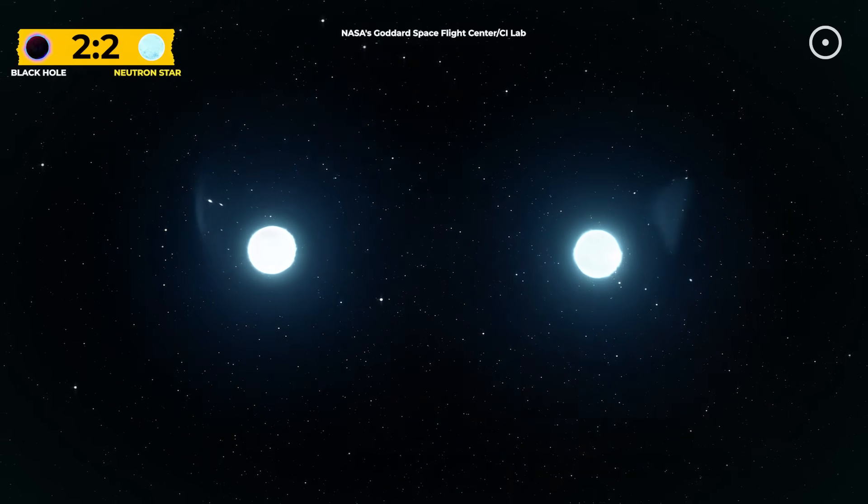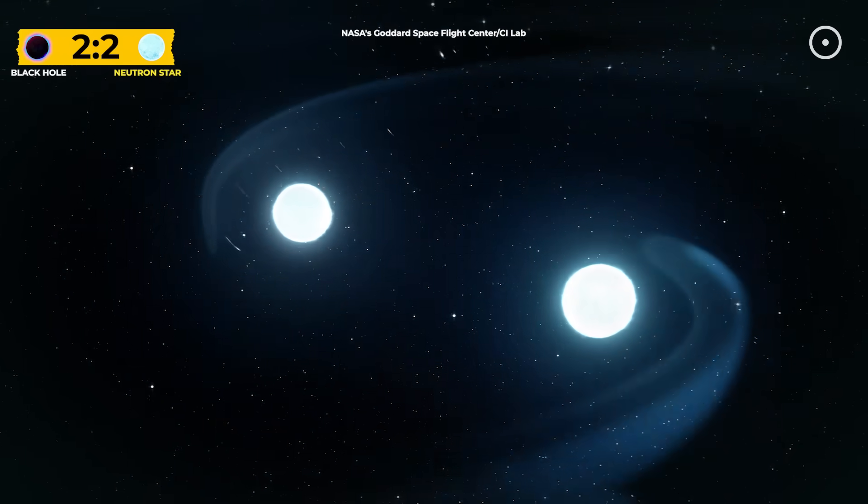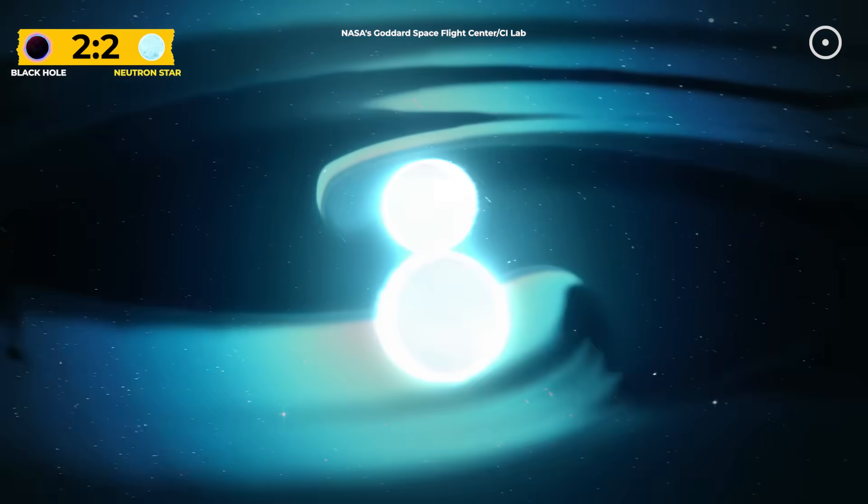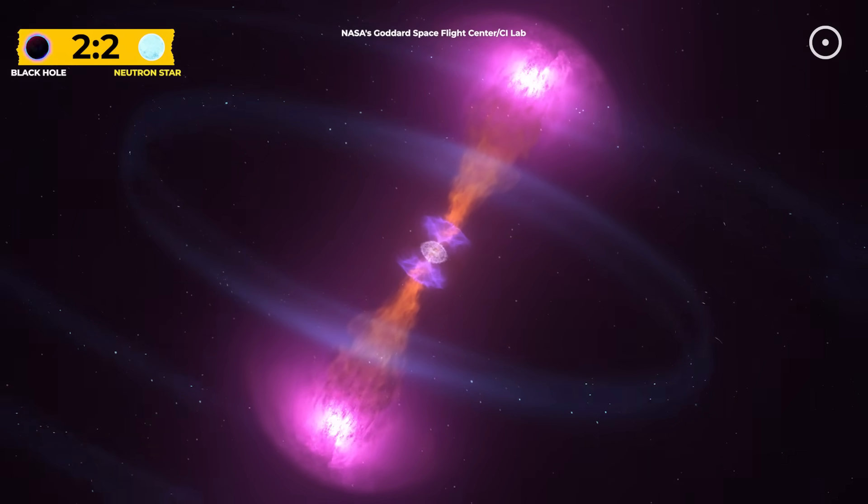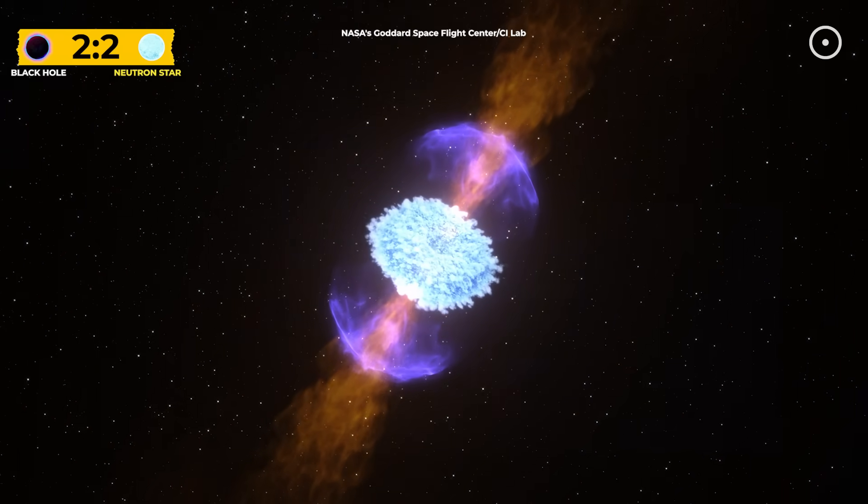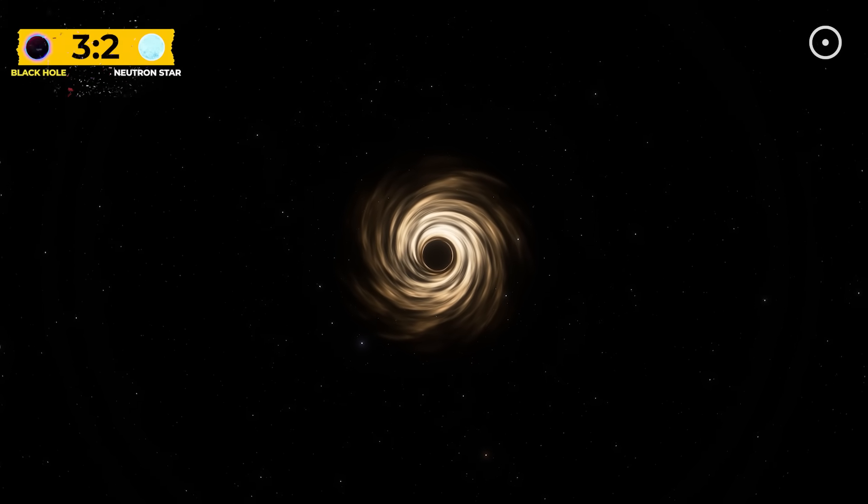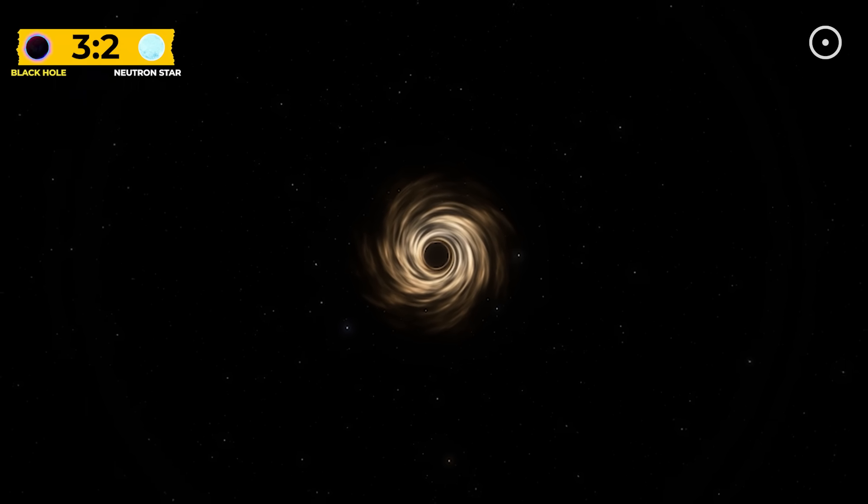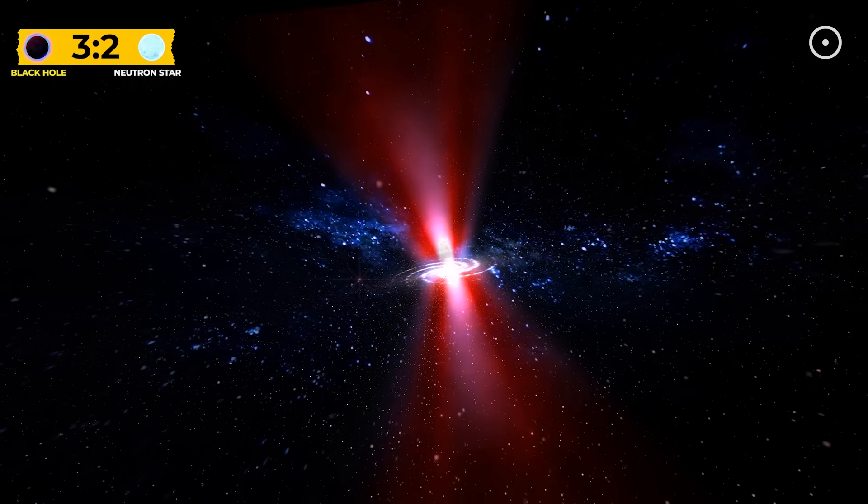Neutron stars have their own special brand of destruction. When two neutron stars collide, they can briefly create conditions hotter than the center of any star, forge heavy elements like gold and platinum, and send gravitational waves rippling through the universe. But in terms of reach, black holes win. Their gravitational influence extends much further. And they can influence space across vast distances, shaping galaxies and devouring anything that strays too close.